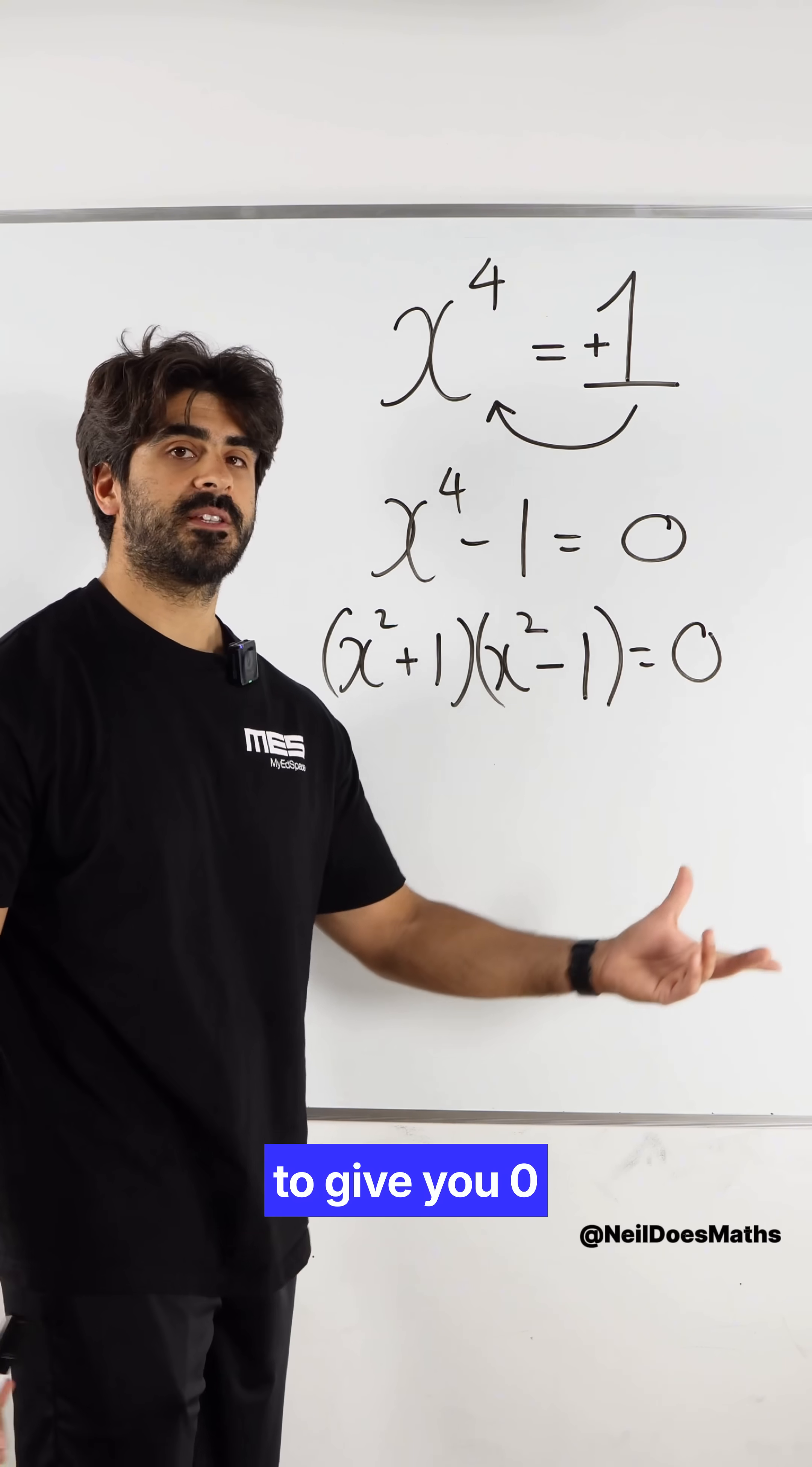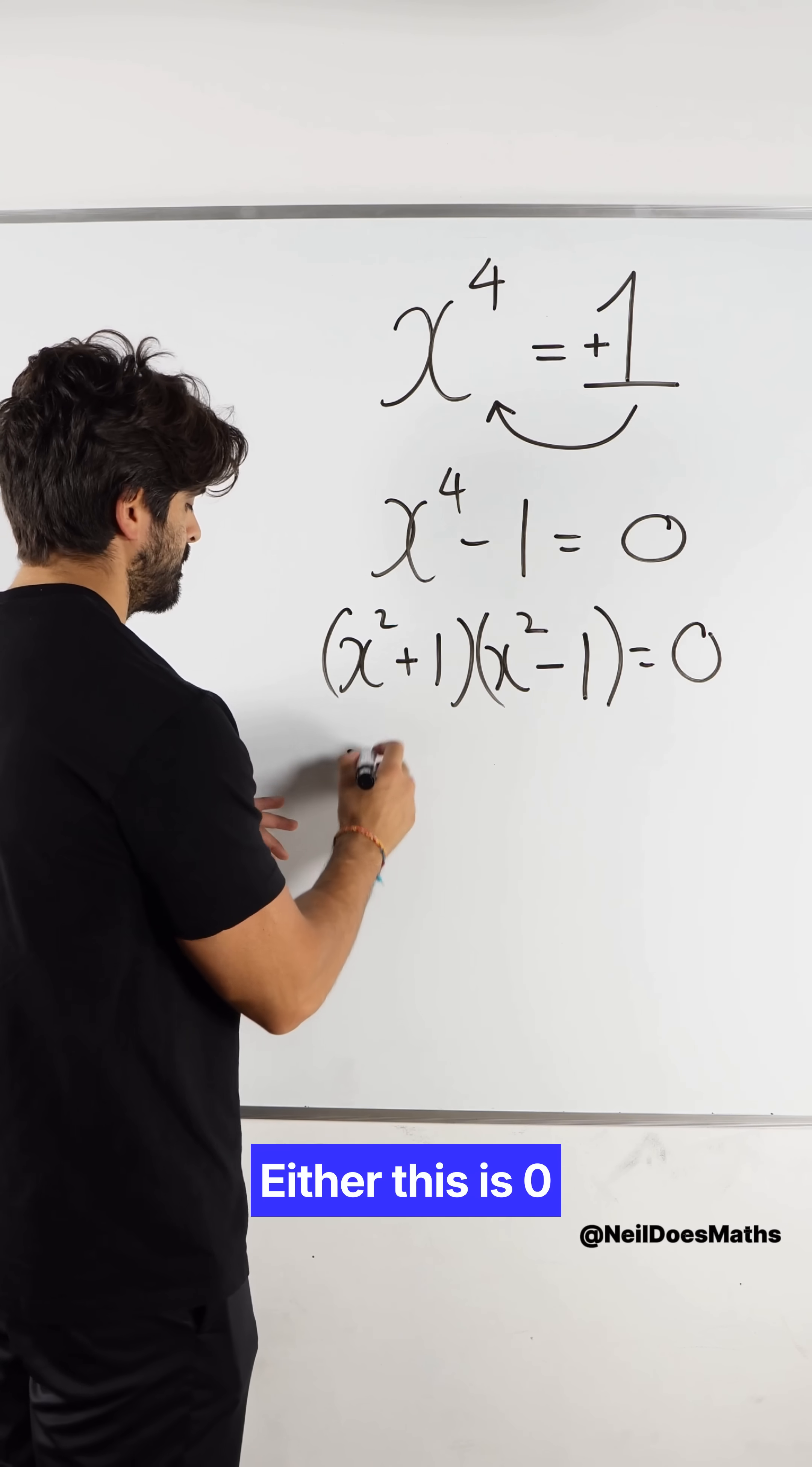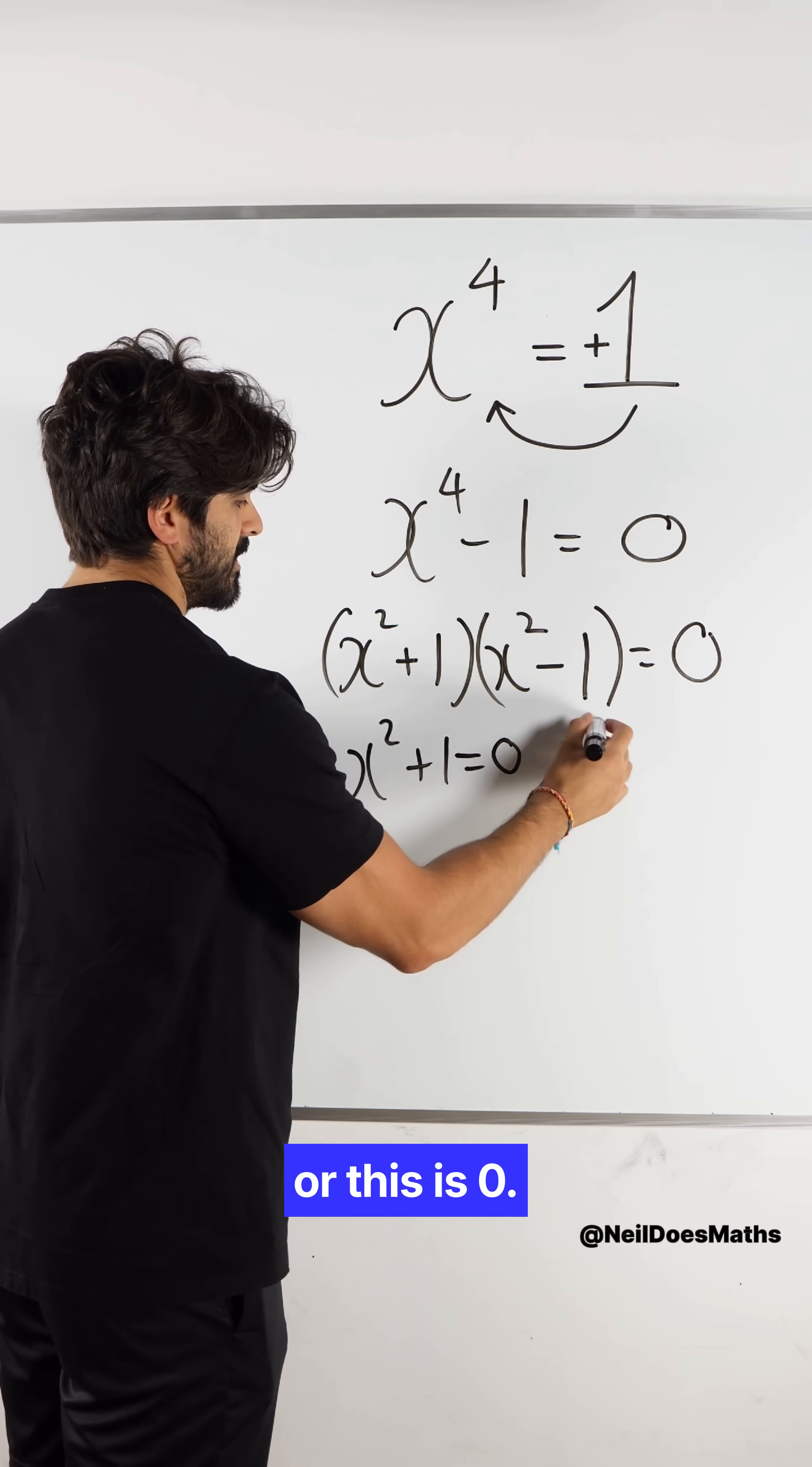Now we have two things that multiply to give you zero. Either this is zero or this is zero.